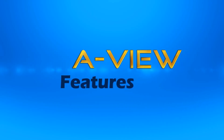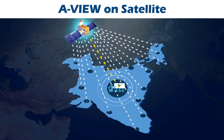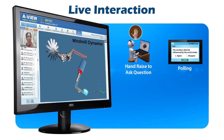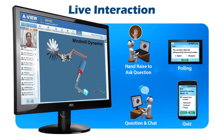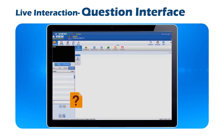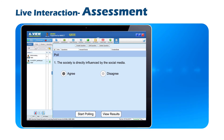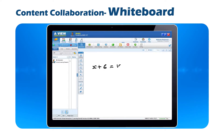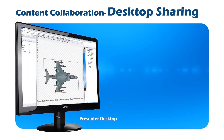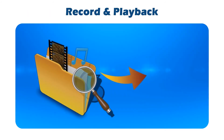AView has several unique features. Using AView on satellite, a teacher can reach remote areas of India where internet is not available. Within AView, there are several user-friendly tools to interact with and assess a huge number of learners at the same time, such as the hand-raise button for interaction. AView has intelligent features for asking questions, sharing documents, conducting assessments, using whiteboards, sharing videos and desktop screens, sharing animated 3D models, recording classes, and much more.